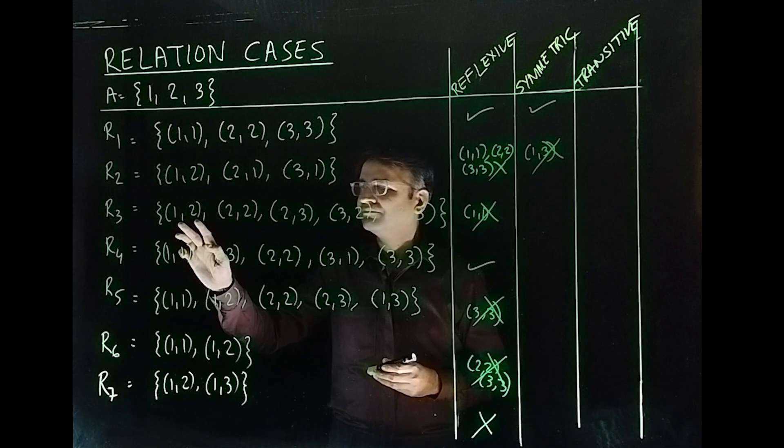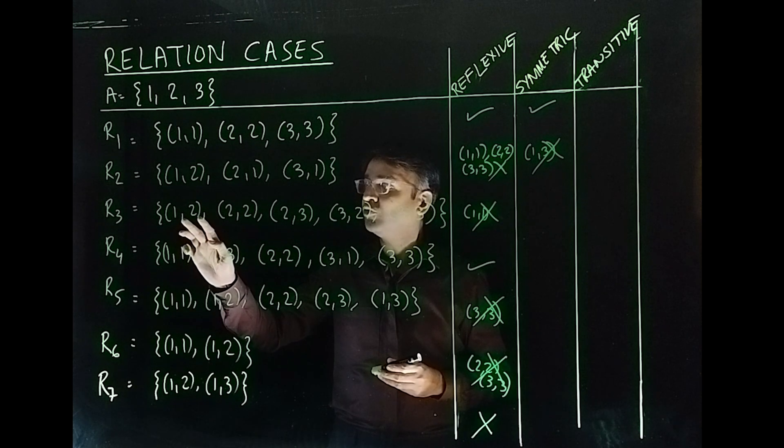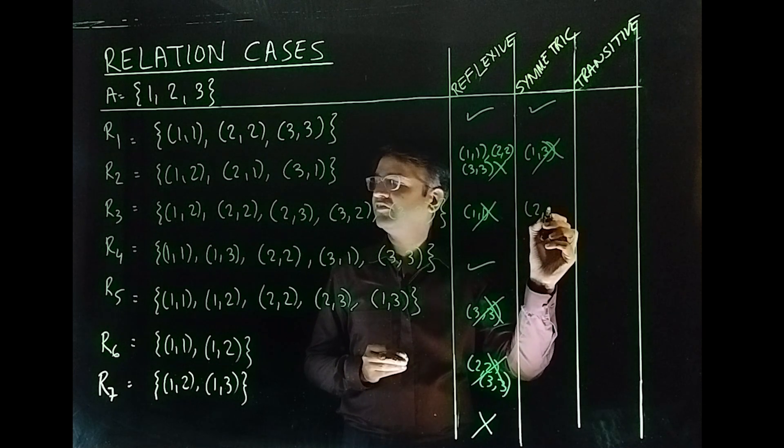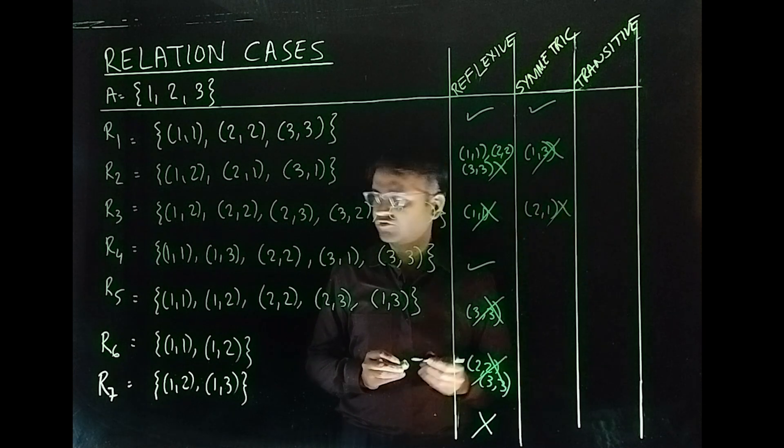You have (1,2). And where is (2,1)? Oh, it's not there. I need not check anything else. Since (2,1) is missing, it is not.